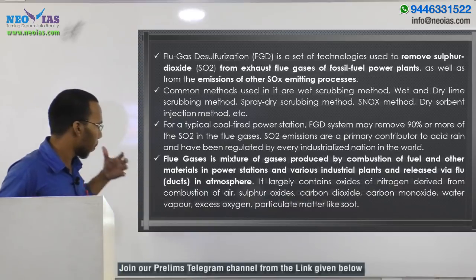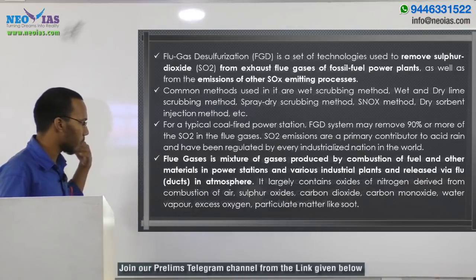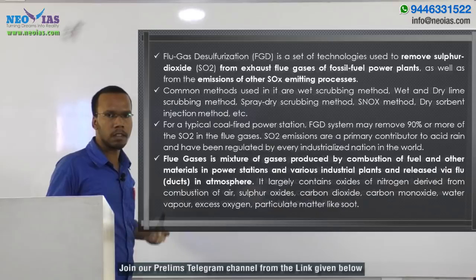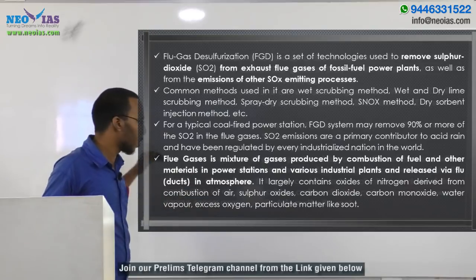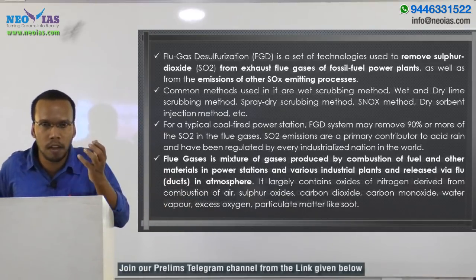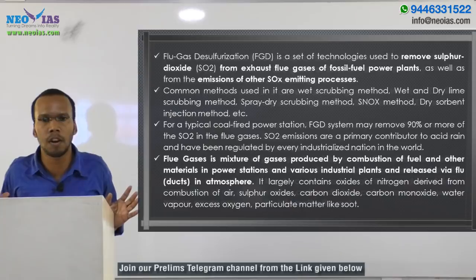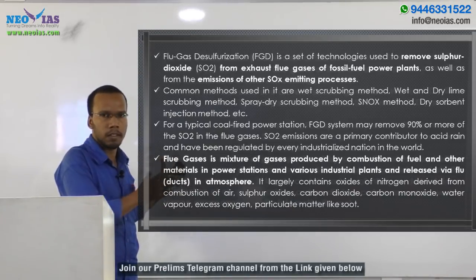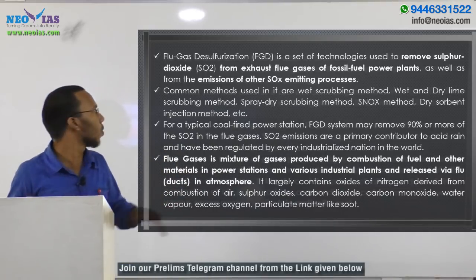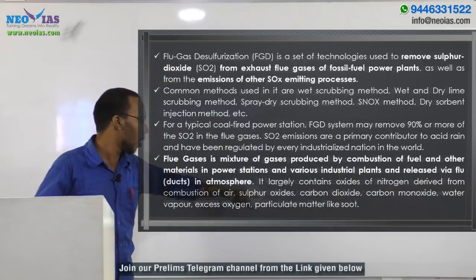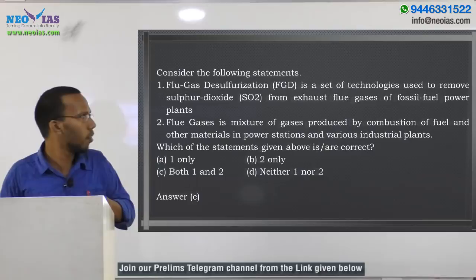Flue gases largely contain oxides of nitrogen derived from combustion of air, sulfur oxides, carbon dioxide, carbon monoxide, water vapour, excess oxygen, and particulate matter such as soot. Soot is a type of particulate matter generated when coal is burned. These components in flue gas have significant environmental impacts, and using flue gas desulfurization allows us to remove the sulfur oxides from it.